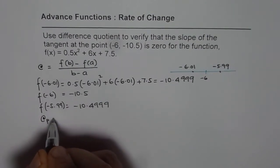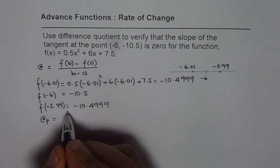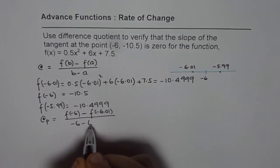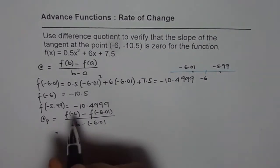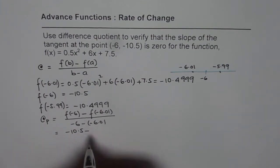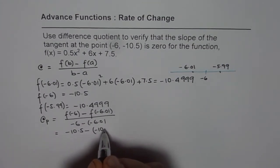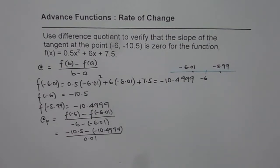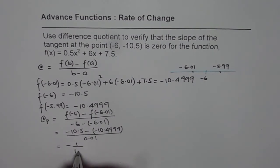The preceding rate of change is [f(-6) - f(-6.01)] / (-6 - (-6.01)). Substituting: (-10.5 - (-10.4999)) / 0.01. The numerator becomes -10.5 + 10.4999 = -0.0001, divided by 0.01, giving -1/100.